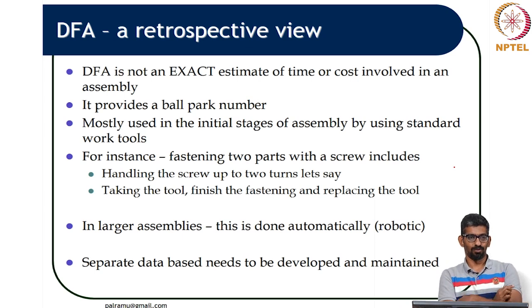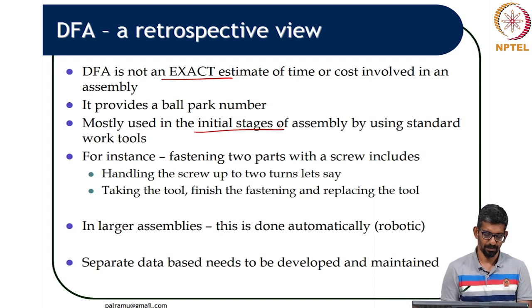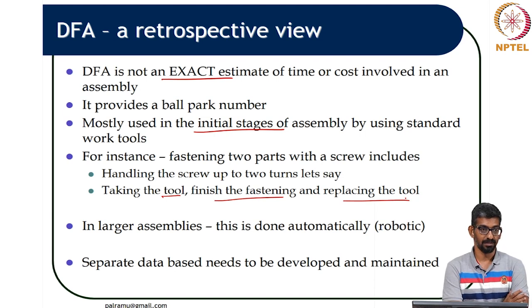Now we will take a retrospective. Right now we all had a perspective, right? On the retrospective - it is not an exact estimate. DFA is not an exact estimate of the time or cost involved. It gives you an idea of what is the time and what is the efficiency, but it is very systematic. It provides a ballpark number. It is usually used in the initial stages. The moment you are done with the prototype you have the actual value. It is usually used only in the initial stages of assembly using standard work tools. For instance, fastening two parts with the screw includes handling the screw, taking the tool, finish the fastening and replacing the tool, but all that is not captured in one sense. It just says the tool time - taking the tool, finish the fastening, replacing the tool, that part is not captured.